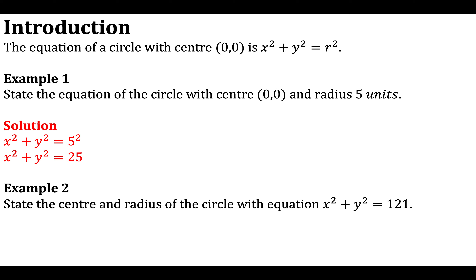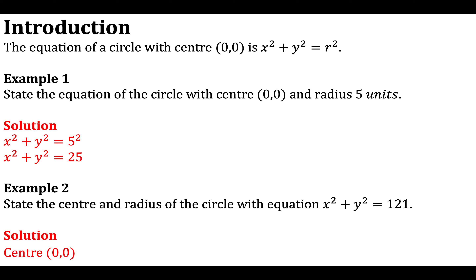Example 2: state the centre and radius of the circle with equation x squared plus y squared equals 121. In example 1 we were given the centre and radius to find the equation; this time we're given the equation and asked to find the centre and radius. Since the equation is in the form x squared plus y squared equals a constant, the centre is at the origin (0, 0). The radius squared is 121, so the radius is the square root of 121, which is 11 units.